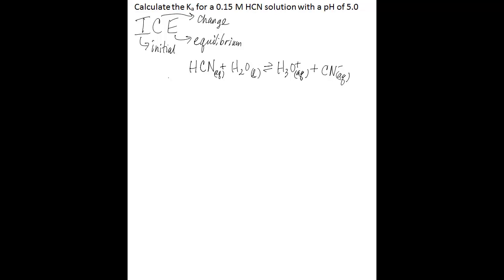So there's the top of our ICE table, and then we're going to have three rows, one for the initial, one for the change, and one for the equilibrium. We're given the initial concentration of HCN, so we're going to write that here. It's 0.15 molar.